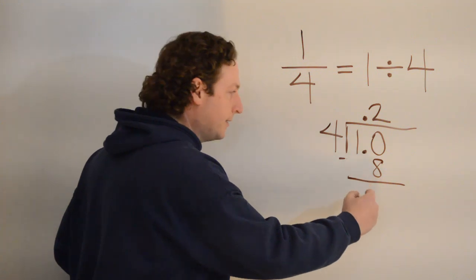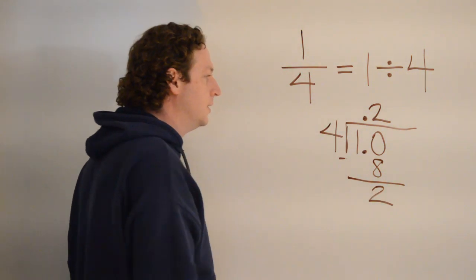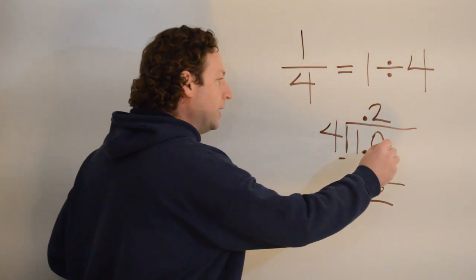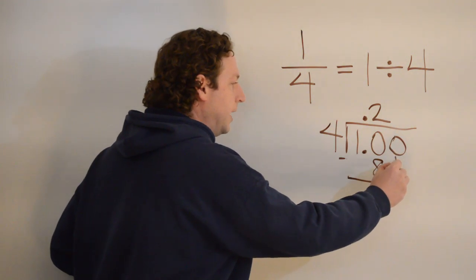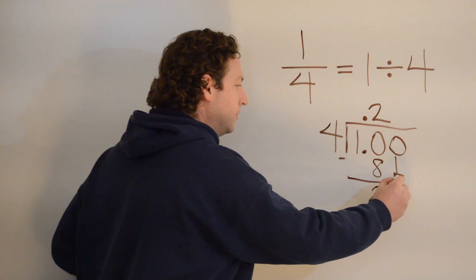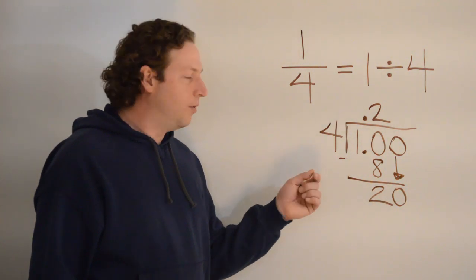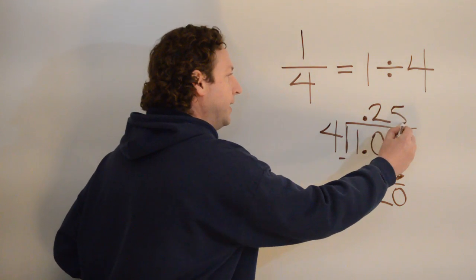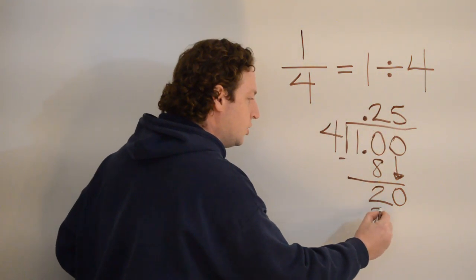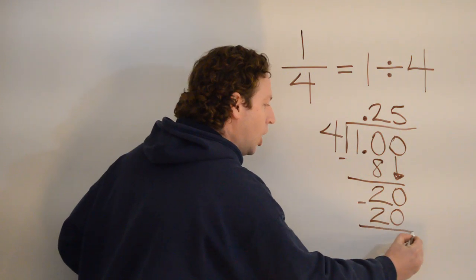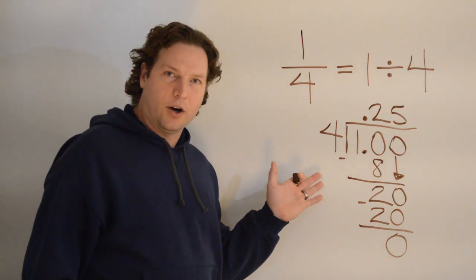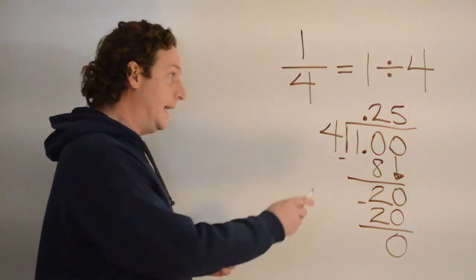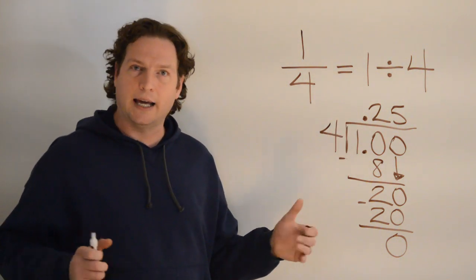Two times four is eight. I'm going to subtract, and I get two. Once again, four cannot go into two. So, I'm going to add another zero and bring it down. Now, four goes into twenty five times. That's right. And five times four is twenty with no remainder. Here, we can see in long division that one divided by four is point two five, just like the calculator.